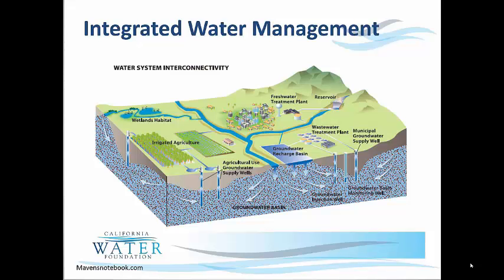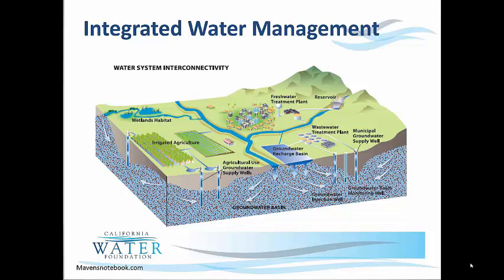One of the features of integrated water resources management that can help to reduce water loss and ensure steady supplies is conjunctive use of groundwater and surface water. Conjunctive use can be as simple as having a small utility rely on both a well and a stream intake for its water supply, or it can be more complex, involving recycling loops to recharge the aquifer when there's water or treated wastewater to use for this purpose.